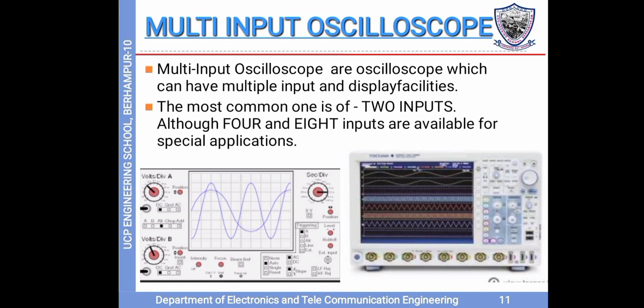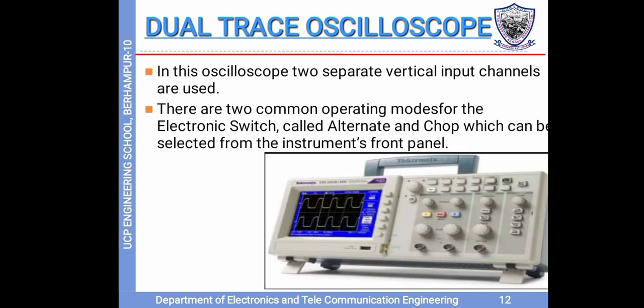Multi-input oscilloscope. These are oscilloscopes which can have multiple input and display facilities. The most common one is two inputs, although four and eight inputs are available for special applications. Dual-trace oscilloscope. In this oscilloscope, two separate vertical input channels are used. There are two common operating modes for the electronic switch, called alternate and chop, which can be selected from the instrument front panel.